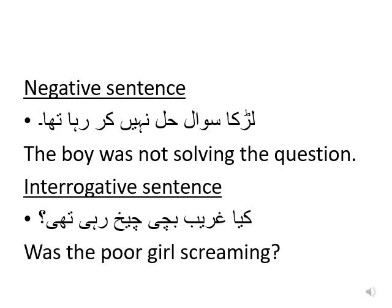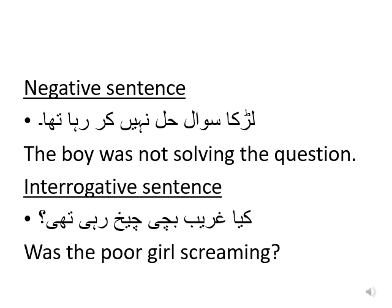For the negative sentence we put 'not', and for interrogative we put 'was' or 'were' at the start. 'Ladka sawal hal ke nahi kar raha tha' translates as 'the boy was not solving the question', with present participle 'solving' and helping verb 'was'. 'Kya gari bachi cheek rahi thi' is interrogative, so the translation is 'was the poor girl screaming', with present participle 'screaming' and 'was' as helping verb at the start.